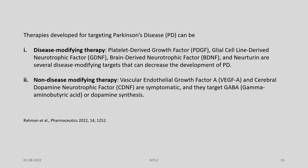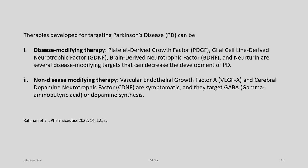Let us focus on targeting Parkinson's disease from the point of gene therapy. Therapies developed for Parkinson's disease can be of two types: disease-modifying therapy or non-disease-modifying therapy. In disease-modifying therapy, platelet-derived growth factors, glial cell line-derived neurotrophic factors, brain-derived neurotrophic factor, and neurturin are several disease-modifying targets that can decrease the development of Parkinson's disease. In the second type, factors like VEGFA and cerebral dopamine neurotrophic factor are symptomatic and target GABA or dopamine synthesis.